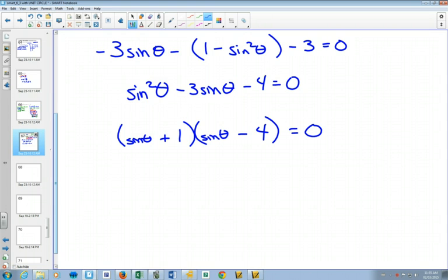Quick check. Foil it out again. Do my first ones match. Do my last ones match. Do my outside and inside combine to give me negative 3. Since that all works, we can now say, well, sine theta is equal to negative 1 or sine theta is equal to 4.